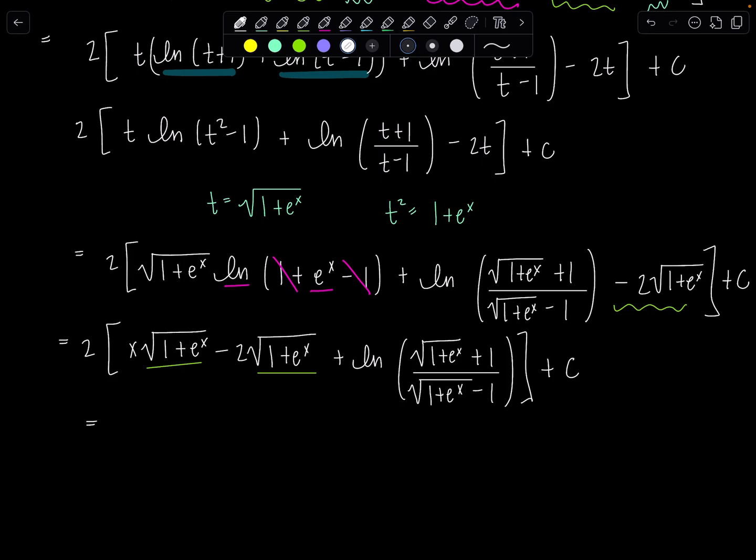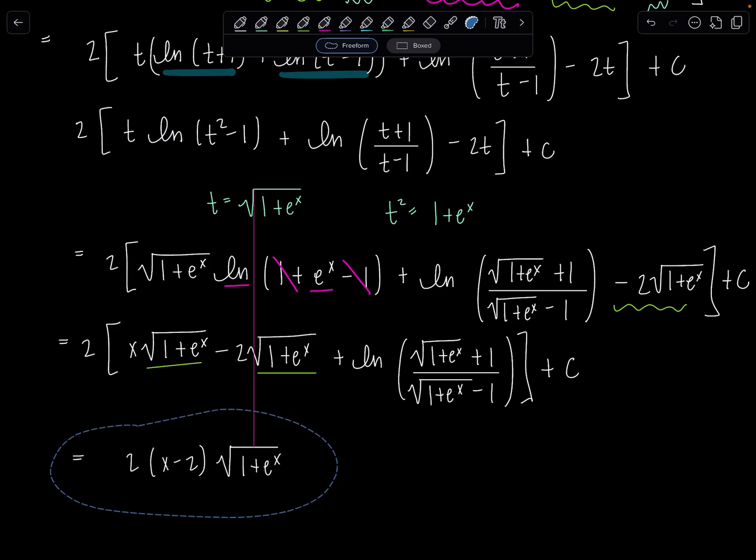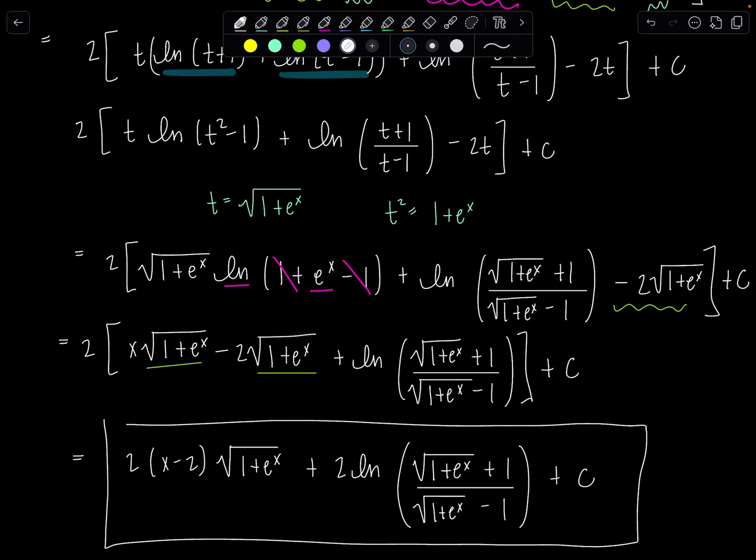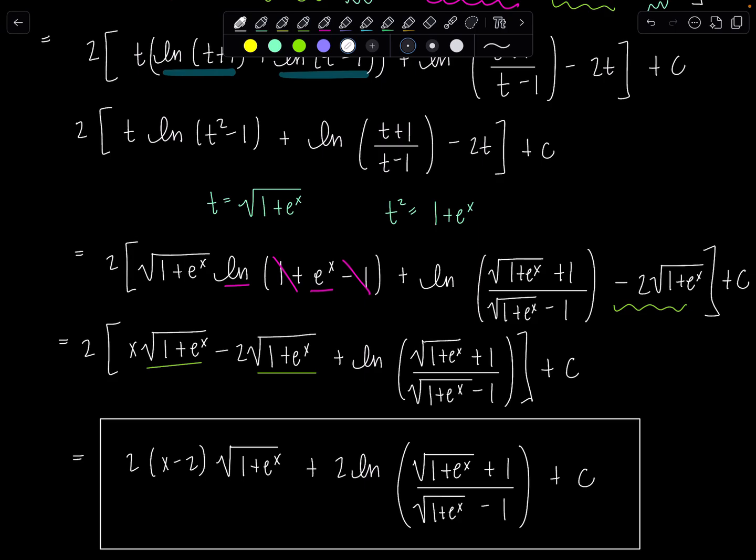Okay. So you could write this as 2 times x minus 2 times the square root of 1 plus e to the x. And then, yeah, let's distribute the 2 to the last term as well. Plus 2 natural log square root 1 plus e to the x plus 1 over square root 1 plus e to the x minus 1 plus c. That's good. I like it. Voila.